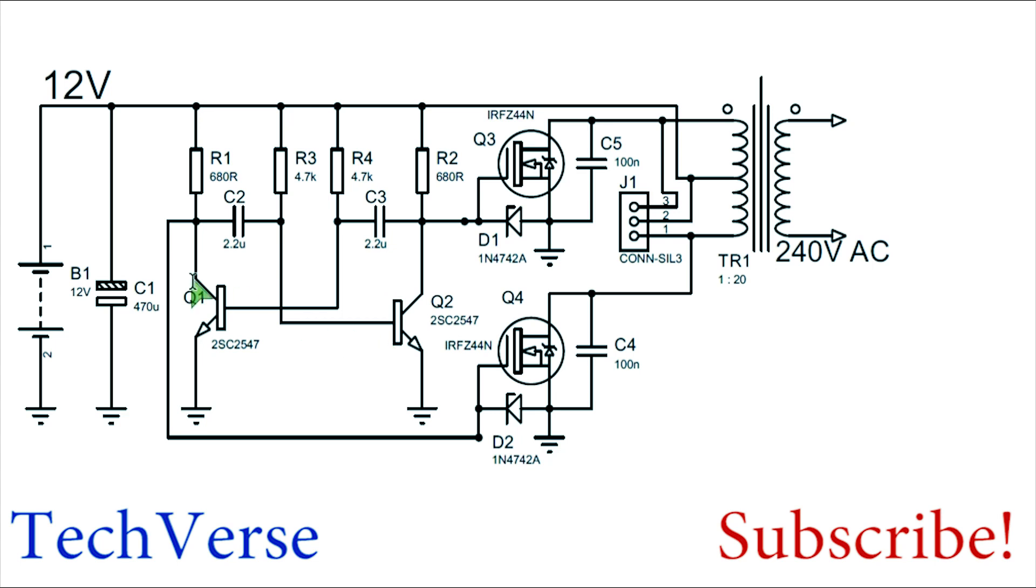What happens is that since no two transistors are exactly the same, one of these will turn on faster when power is applied. Assuming Q1 turns on fast, this means that Q2 will be off, and so the first MOSFET Q3 will conduct since 12 volts will appear at its gate. When this conducts, current flows from the 12 volt rail through the upper half primary winding through MOSFET Q3 to ground.